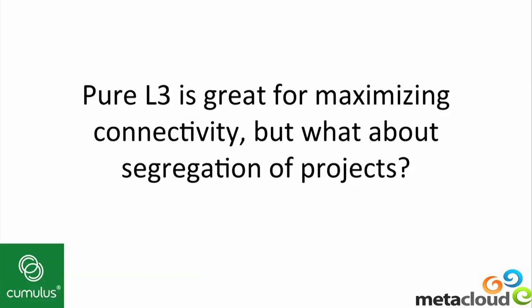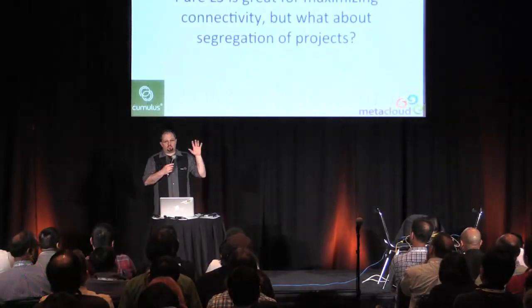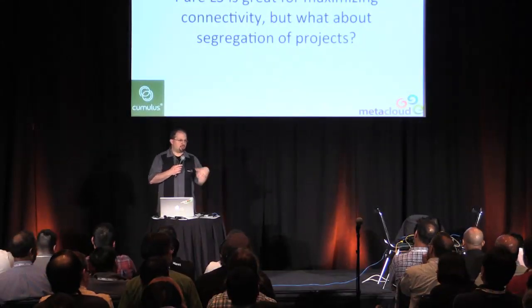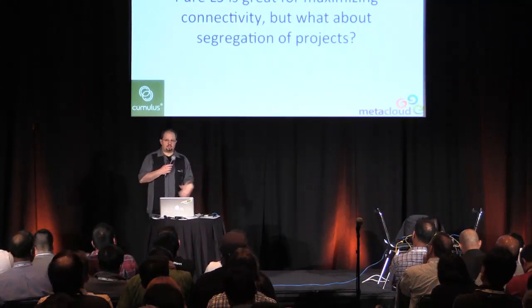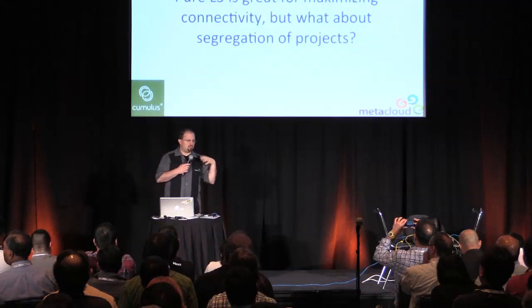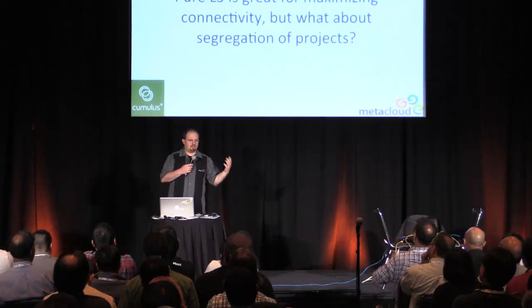We just talked about Pure L3 and why we think it's better for really large capacity clouds, especially if you need to maximize east-west bandwidth — think big data, think Hadoop, those sort of workloads. Pure L3 is great. But one of the things we like about our OpenStack deployments is that we can create individual projects. Those projects can both have security groups to provide layer three separation security, and we can use something like VLAN to provide a certain amount of layer two separation. So if we're using a Pure L3 deployment, how do we do that?